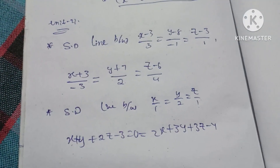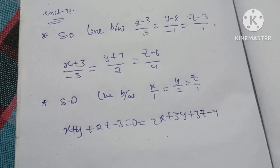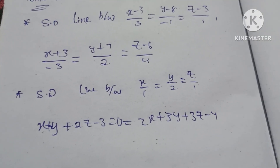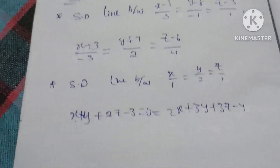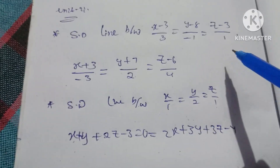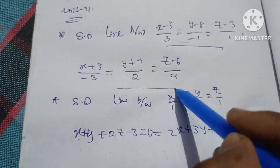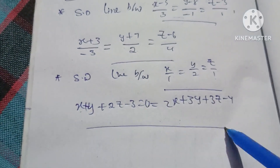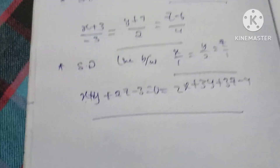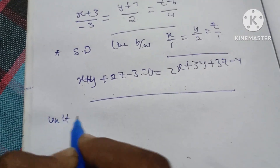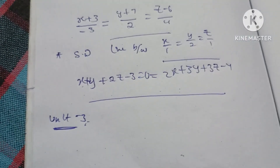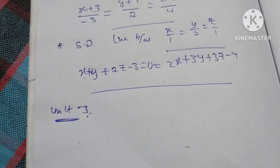So we have Unit 3, which also carries 10 marks. We have two methods, one line, one equation, and one example. Most of the time, the question involves a point of contact.